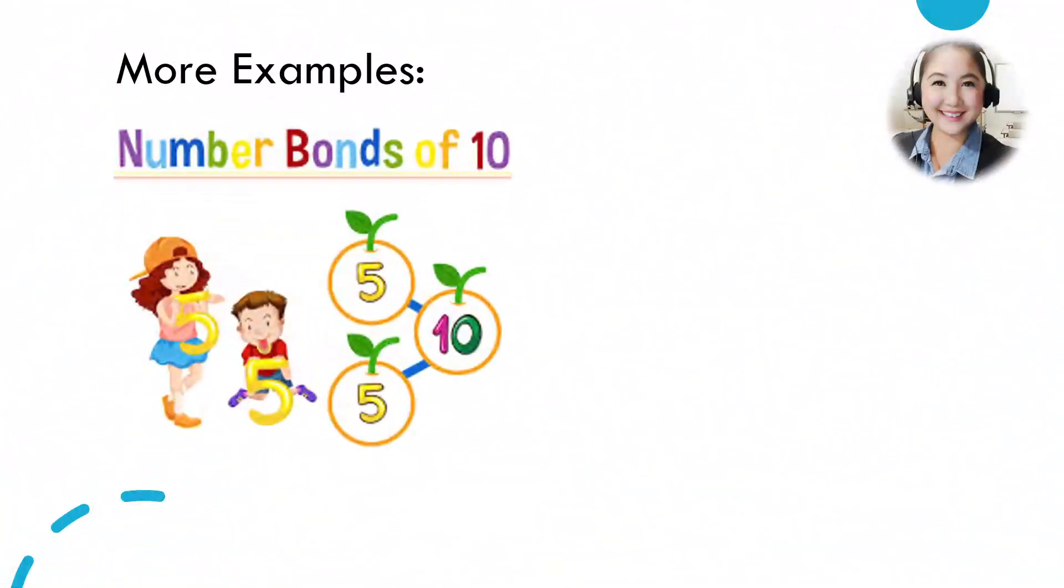More examples. This is showing you number bonds of 10. It is being split into two, five, five. Can you think of another pairs of 10? Yes, two and eight makes 10.